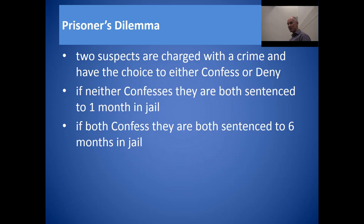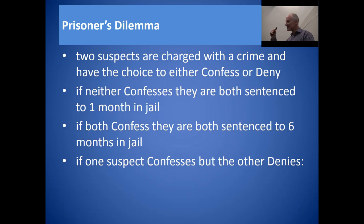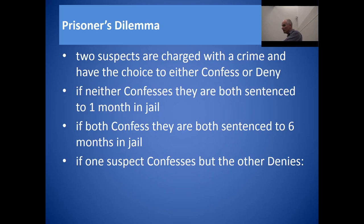We know what happens if they both deny, and what happens if they both confess. But what about one confesses and one denies? This particular part causes confusion — students often get it the wrong way round. So listen carefully and get clear for yourselves what the nature of these incentives are. If one confesses whilst the other denies, the police will have the confession that they require — so someone is going to get sentenced.